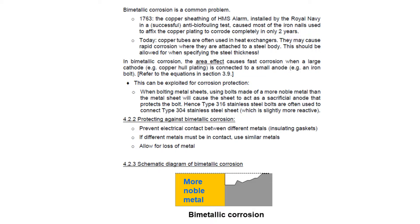Alternatively, use two very similar metals so the bimetallic effect is less significant. In the worst case, you could allow for some loss of the reactive metal by making the nails or screws the more noble part. This is frequently done with stainless steel: large quantities of 304 stainless steel sheet are slightly more reactive than the commonly chosen 316 stainless steel screws, so bimetallic corrosion protects the delicate bolts at the cost of slightly more corrosion over the large surface area of the 304 stainless steel sheet, which can tolerate it.